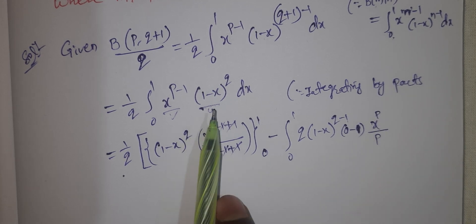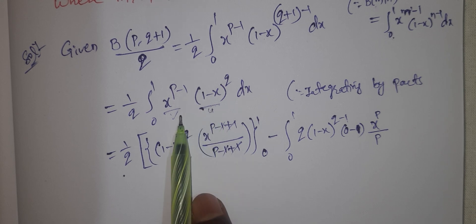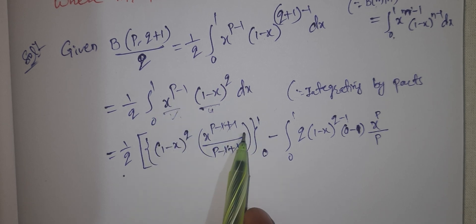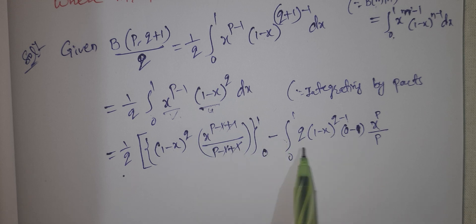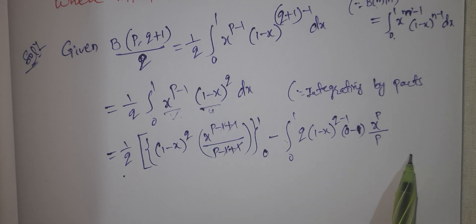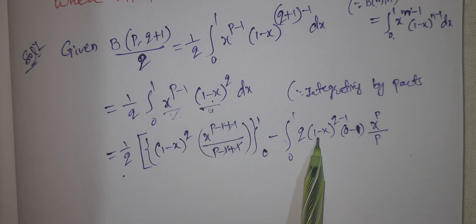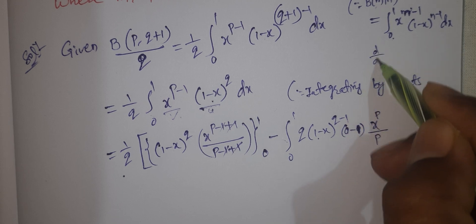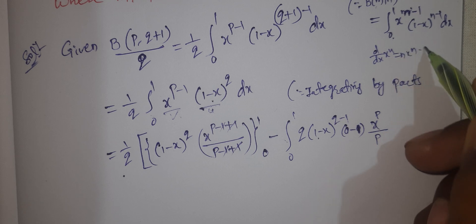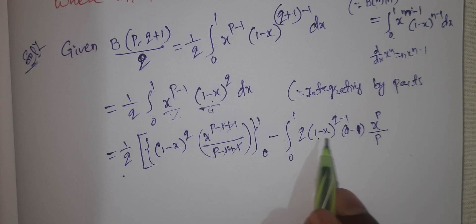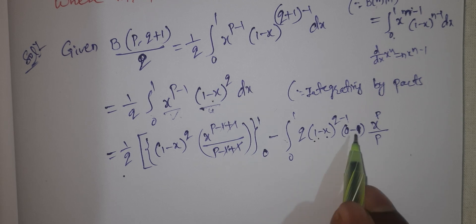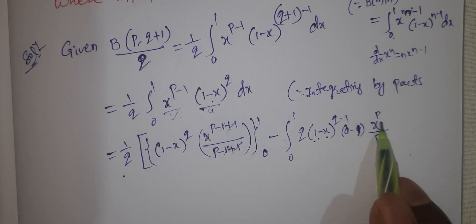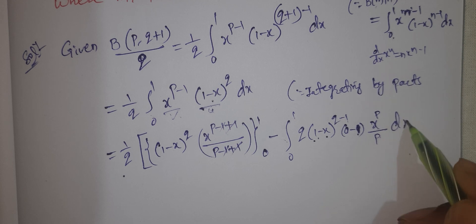We set u and v in the integration by parts formula. The first integral term is u times v, then minus the integral of v times the derivative of u. The derivative of x to the power of n is applied here, giving us x to the power of n. So as this integration proceeds, let me show you the same. Into dx.